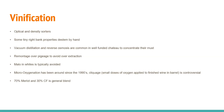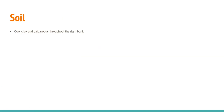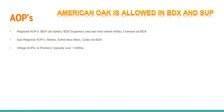Typically on the Right Bank you'll find about a 70-30 Merlot–Cabernet Franc blend. The Right Bank reaches its peaks at about 90 meters elevation, with cool clay and calcareous soils throughout. Regional AOPs are Bordeaux, Bordeaux Supérieur, and Crémant de Bordeaux — and notably, American oak is allowed at both the Bordeaux and Bordeaux Supérieur levels. Sub-regional AOPs are Médoc, Entre-Deux-Mers, and Côte de Bordeaux. Village AOPs include Pomerol.